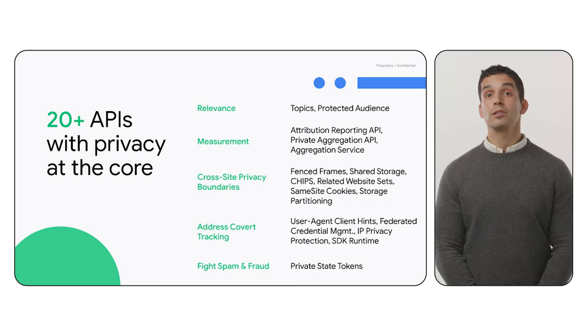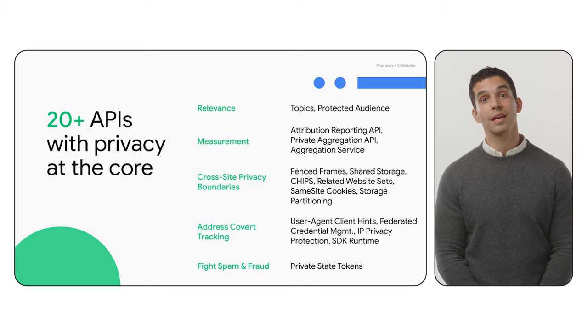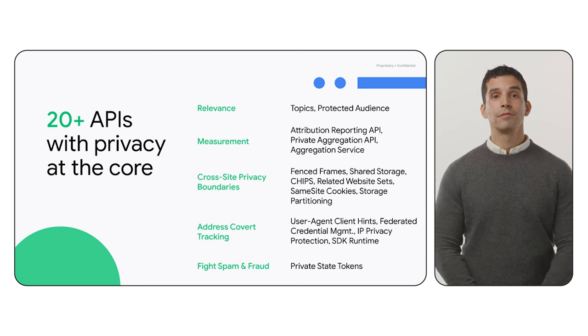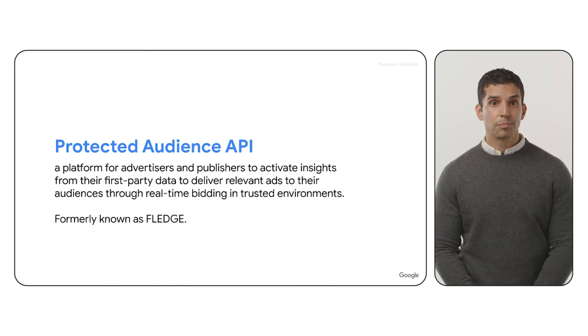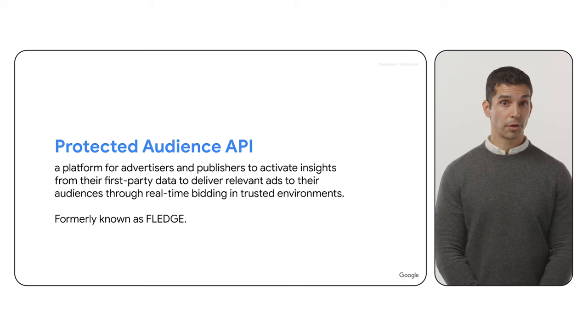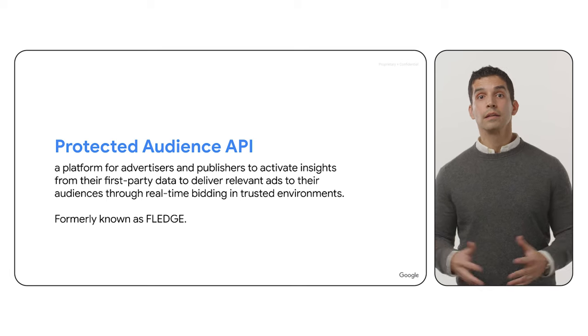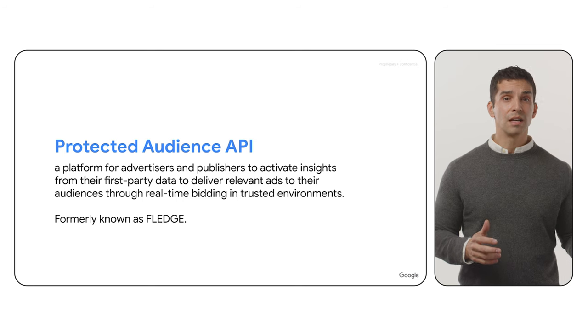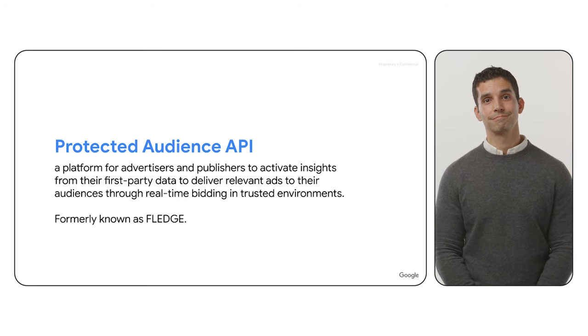Let's first orient ourselves on the Privacy Sandbox. Privacy Sandbox is a collaborative cross-industry effort to build new technologies into Chrome and Android that improve user privacy and give businesses the tools they need to succeed online, including effective digital advertising. The Privacy Sandbox consists of over 20 APIs that address a broad range of key ecosystem use cases that today rely on cross-site identifiers. One of those technologies is the Protected Audience API, formerly known as Fledge. In a nutshell, Protected Audience API enables businesses to activate insights from their first-party data to deliver relevant ads across the internet through real-time bidding in trusted environments. The beauty of this is that it not only protects people's data, but can also help to drive more effective results for businesses and publishers.